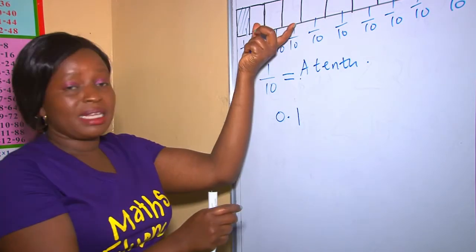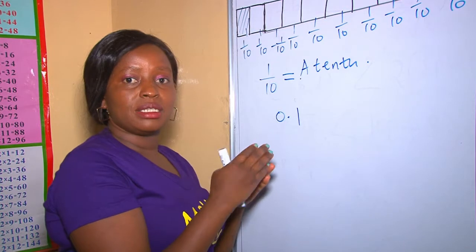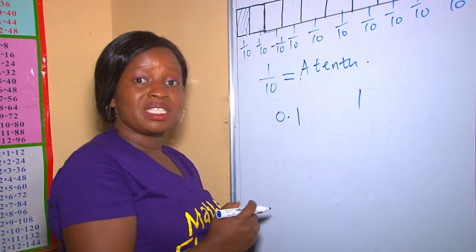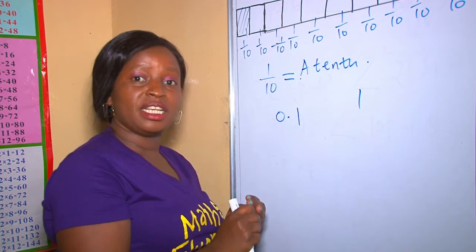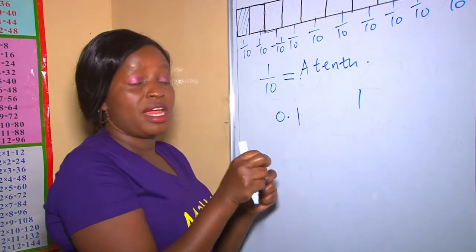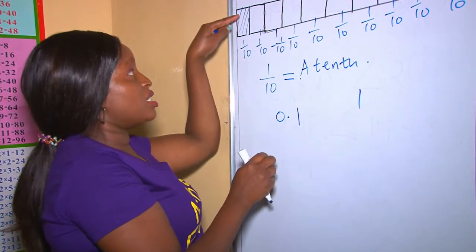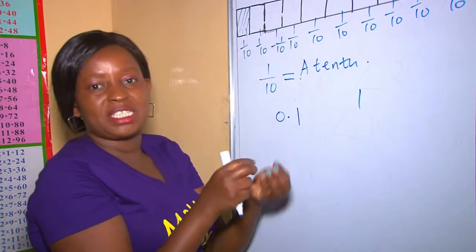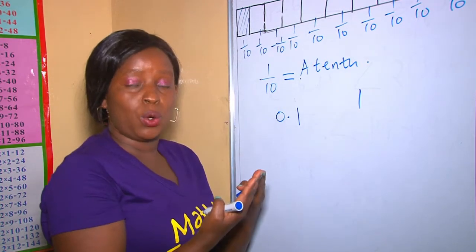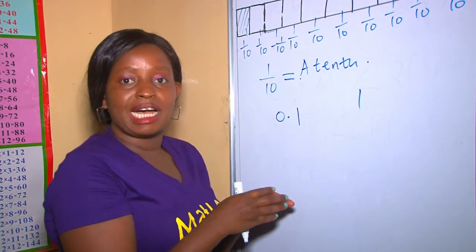Going back to the same bar of chocolate — if a teacher had only one pupil, he could have given the child the whole of it, that is one. But because there were 10 children and the teacher needed to be fair, he had to divide the bar into small portions. These 10 parts are very tiny compared to when one gets a whole bar of chocolate alone. Therefore, place value helps us when it comes to writing fractions as decimals.